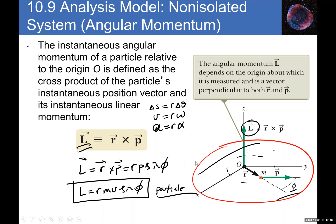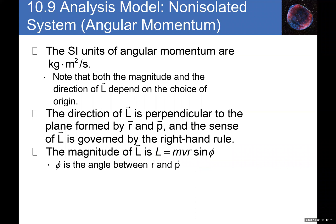The units for angular momentum are kilograms times meters squared per second. Since L = rmv sinφ, r is meters, m is kilograms, v is meters per second, and sinφ is unitless — so it works out to kg·m²/s.